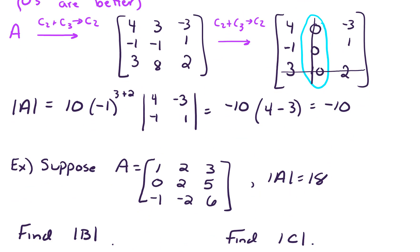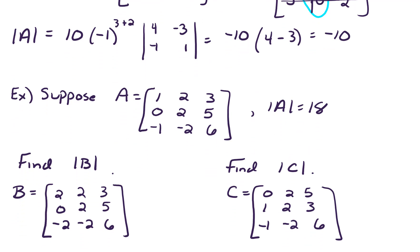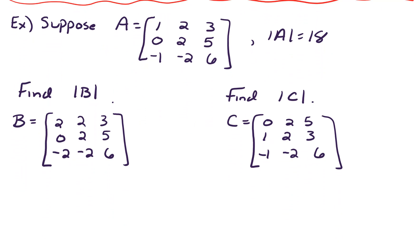Let's take a look at another example. So our next example, we're given a matrix A, and we're given that the determinant is 18. Now, we're asked to find the determinant of B. So the question is, how is B different or similar than A? How did we use A to get to B? Well, look at column 2.